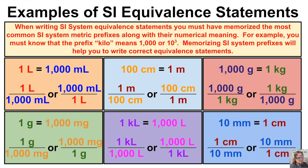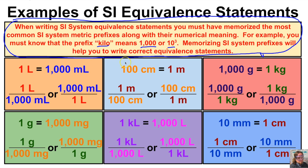When writing SI system equivalence statements, you must have memorized the most common SI system metric prefixes along with their numeric meaning. For example, the prefix kilo means a thousand or ten to the third. Here's an equivalence statement: one liter is one thousand milliliters. We can express this as one liter over one thousand milliliters, or as one thousand milliliters over one liter.